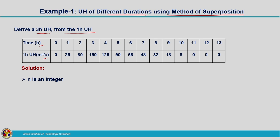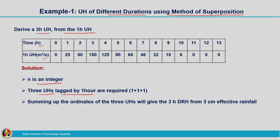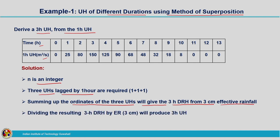Since N is an integer, we will be making use of the principle of superposition, and 3 unit hydrographs will be lagged by 1 hour each. These 3 unit hydrographs superimposed together will produce a 3-hour direct runoff hydrograph due to 3 centimeters of rainfall. By making use of the principle of proportionality, we can divide the resulting 3-hour direct runoff hydrograph by the effective rainfall of 3 centimeters, giving us the 3-hour unit hydrograph.